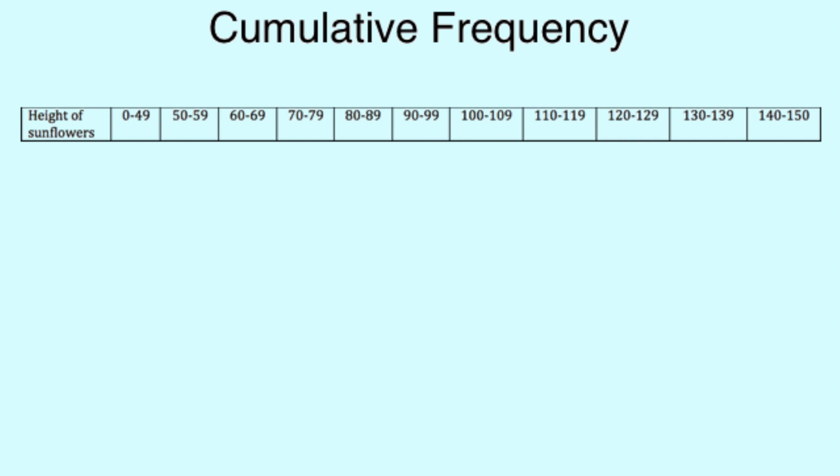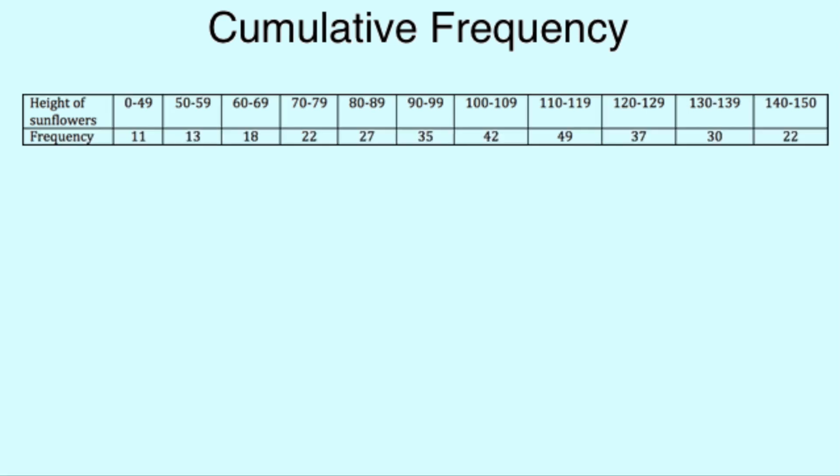So we've taken our data and divided it into 11 columns, dividing the heights into 9 centimeter groups from those sunflowers less than 49 centimeters to the tallest at less than 150 centimeters.